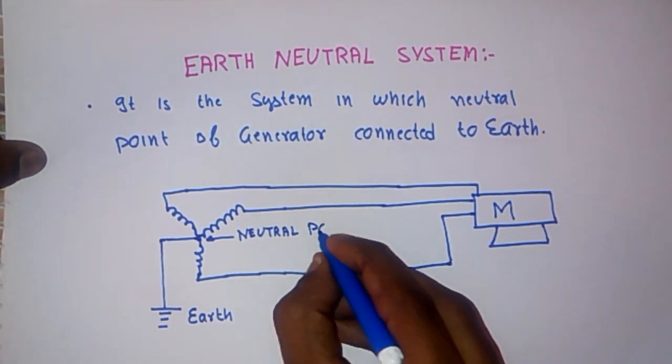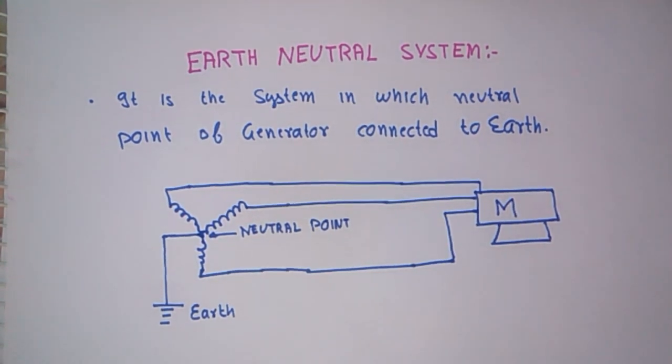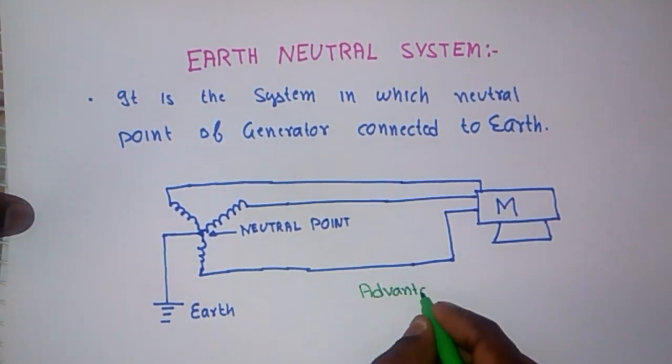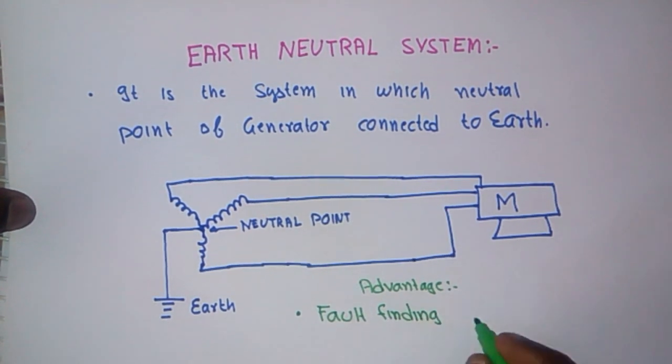This is the system that is known as Earth Neutral System. Its advantage is the fault finding in this system is easy.